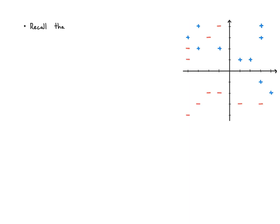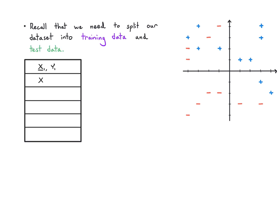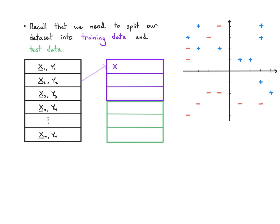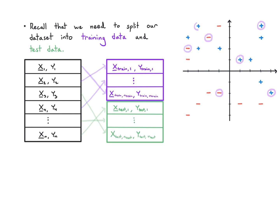Recall that we need to split our dataset into a training dataset and a test dataset. We randomly take all the pairs of feature vectors and their labels — n of them — take some fraction and call them the training data set from 1 up to n_train, and take the remaining part as the test dataset from 1 up to n_test, so n_train + n_test = n. In this visualization, those are the training data and the green points are the test data.